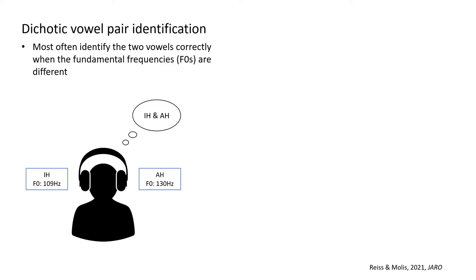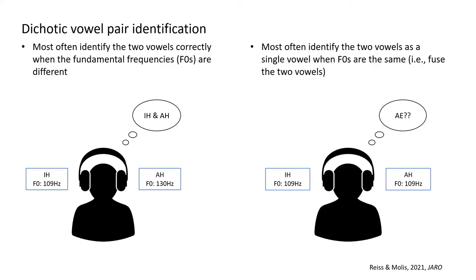On the other hand, when the fundamental frequencies of the two vowels are the same, the listeners tend to identify only one vowel — that is, the listeners fuse the two vowels. For example, when the two vowels are both presented with a fundamental frequency of 109 Hz, the subject may tell you that they have heard an 'ad' as in 'hand.'